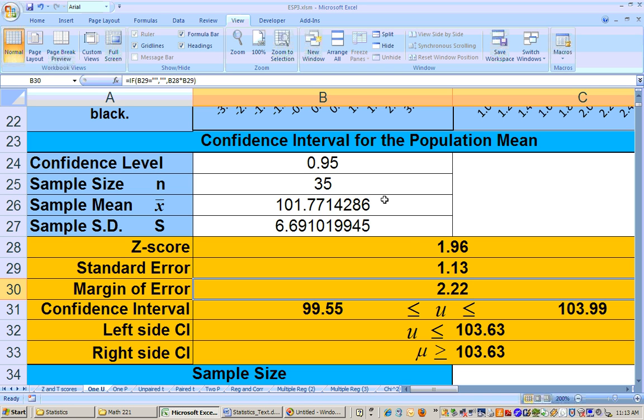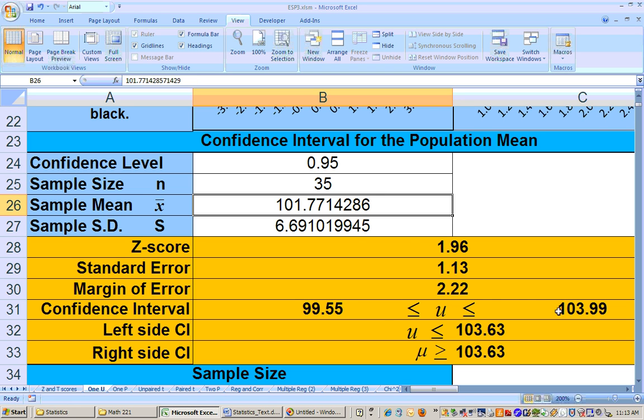How would we get the point estimate of 101.77? Add these two together and divide by 2, and you'll get the point estimate.